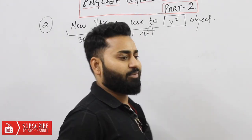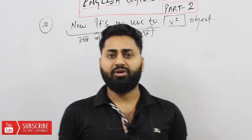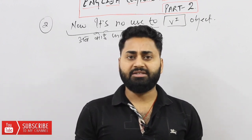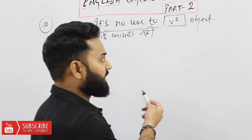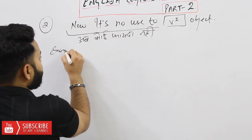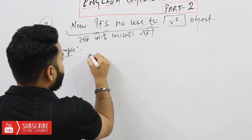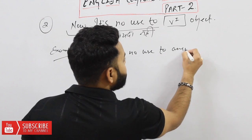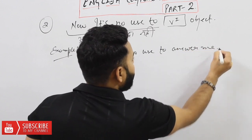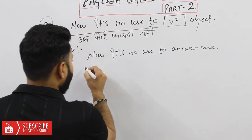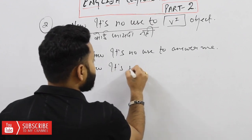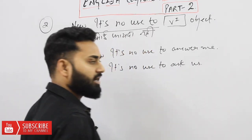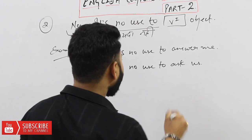जैसे: अब बताने का कोई फाइदा नहीं, अब जाने का कोई फाइदा नहीं, अब हमसे लड़ने का कोई फाइदा नहीं — इन सभी sentences को हम इस logical की मदद से बनाएंगे। Example: 'Now it's no use to answer me' — यानि अब मुझे जवाब देने का कोई फाइदा नहीं। Another example: 'Now it's no use to ask us' — यानि अब हमसे पूछने का कोई फाइदा नहीं।